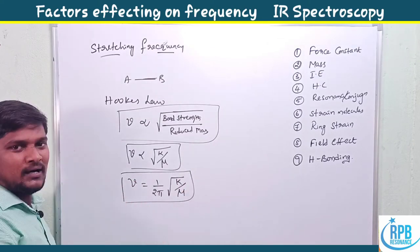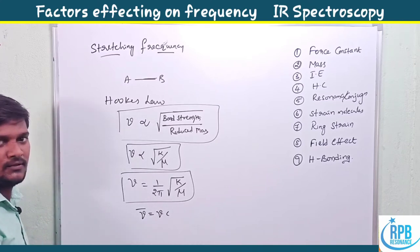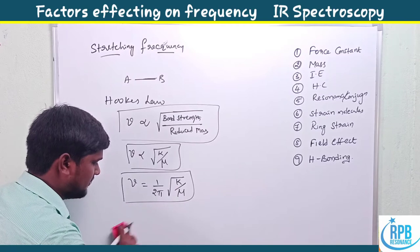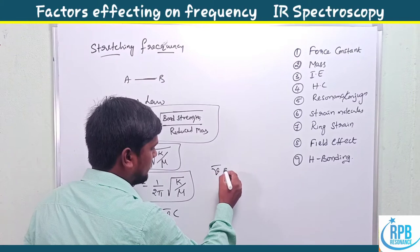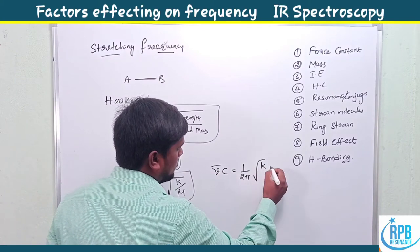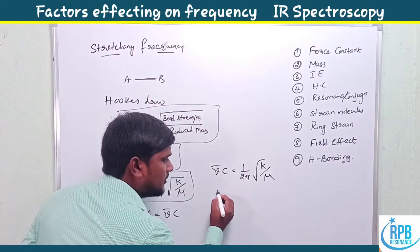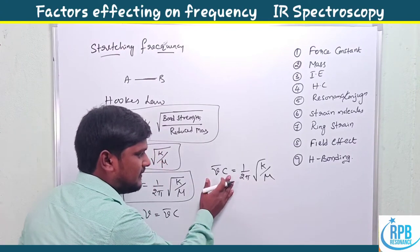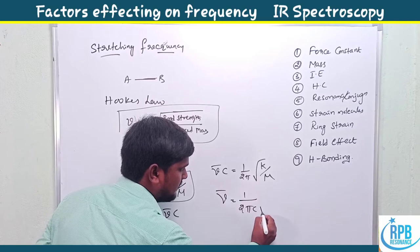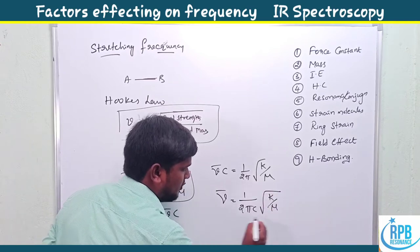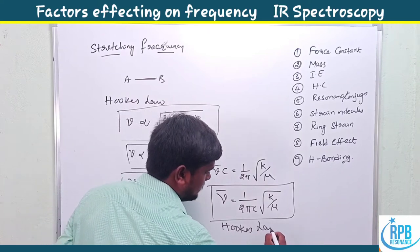We know the relationship between frequency ν and wavenumber ν̄: ν = ν̄ × c. Substituting into the equation, ν̄ × c = (1/2π) × √(k/μ). When c moves to the right side as denominator, we get ν̄ = (1/2πc) × √(k/μ). This is Hooke's law for a vibrating molecule.